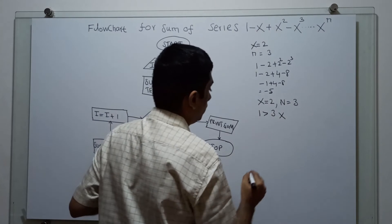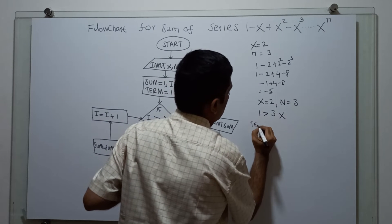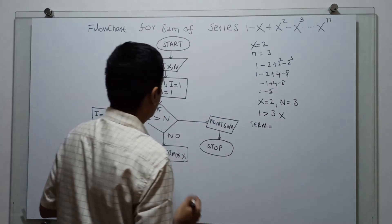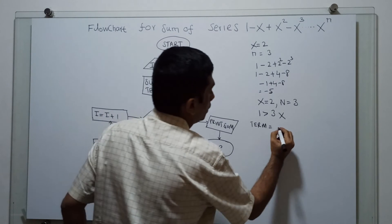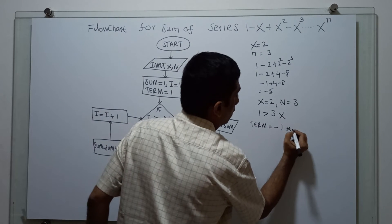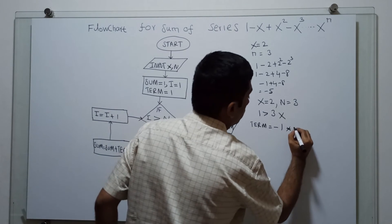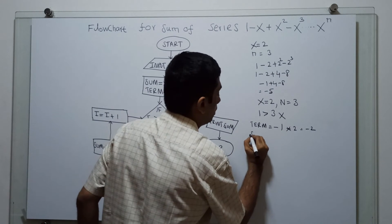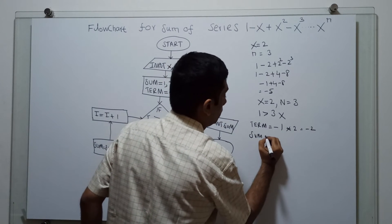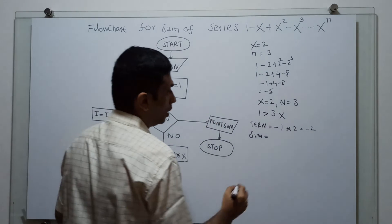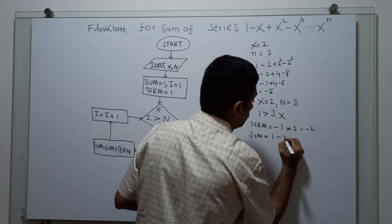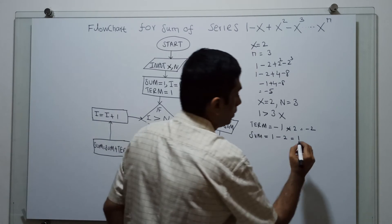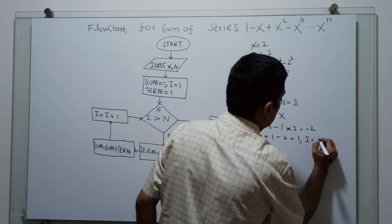Since it is false, term equal to minus of term into x. The initial value of term is 1, so minus 1 into 2 equals minus 2. Then sum equal to sum plus term: existing sum is 1, plus term minus 2, which gives 1 minus 2 equal to minus 1. Now i equal to i plus 1, so i becomes 2.